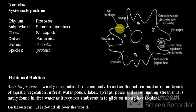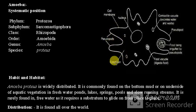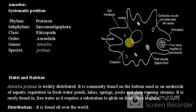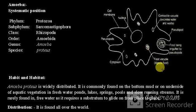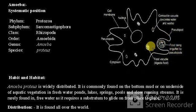This is called the cell membrane, this one is the nucleus, and these projections are called pseudopodia or pseudopods. Inside is the cytoplasm. This is called the food vacuole, and this one is food being engulfed by the pseudopods. These are the pseudopods and this is the food particle.